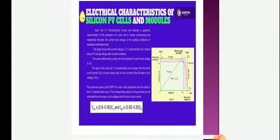Then electrical characteristics of the PV cells and module. Solar cells IV characteristic curves are basically a graphical representation of the operation of a solar cell or module, summarizing the relationship between the current and voltage at the existing conditions of irradiation and temperature.